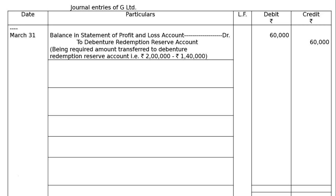First entry: Statement of Profit and Loss Account debited to Debenture Redemption Reserve Account — being the required amount transferred to Debenture Redemption Reserve Account. That is Rs. 2,00,000. Why Rs. 2,00,000? It is Rs. 8,00,000 × 25%, the required amount as per the Finance Act 2013 — 25% of the face value of debentures to be redeemed before considering premium on redemption. We already have Rs. 1,40,000 in DRR, so Rs. 2,00,000 minus Rs. 1,40,000 equals Rs. 60,000 in debit and credit.